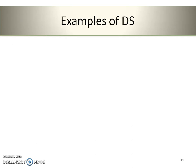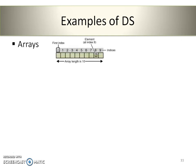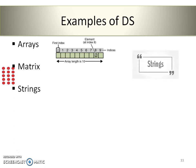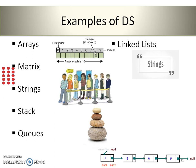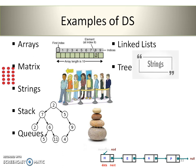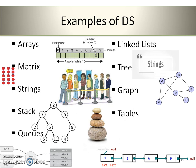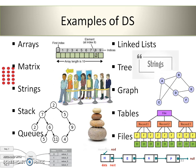Now we'll see some examples of data structures. The list includes: array, matrix or 2D array, strings or character array, stack, queue, linked list, tree, graph, tables, and files. These are a few of the examples of data structures.